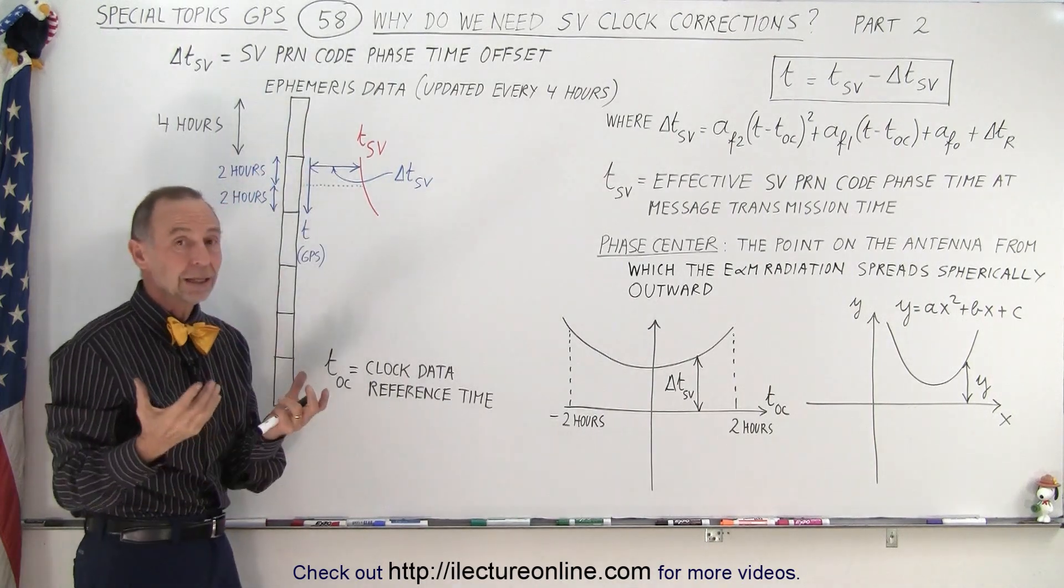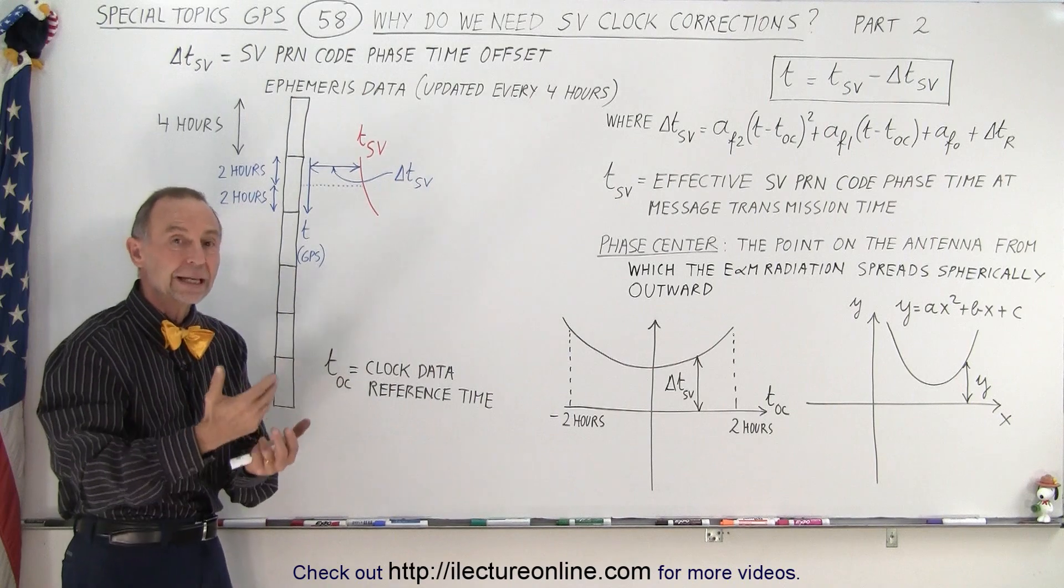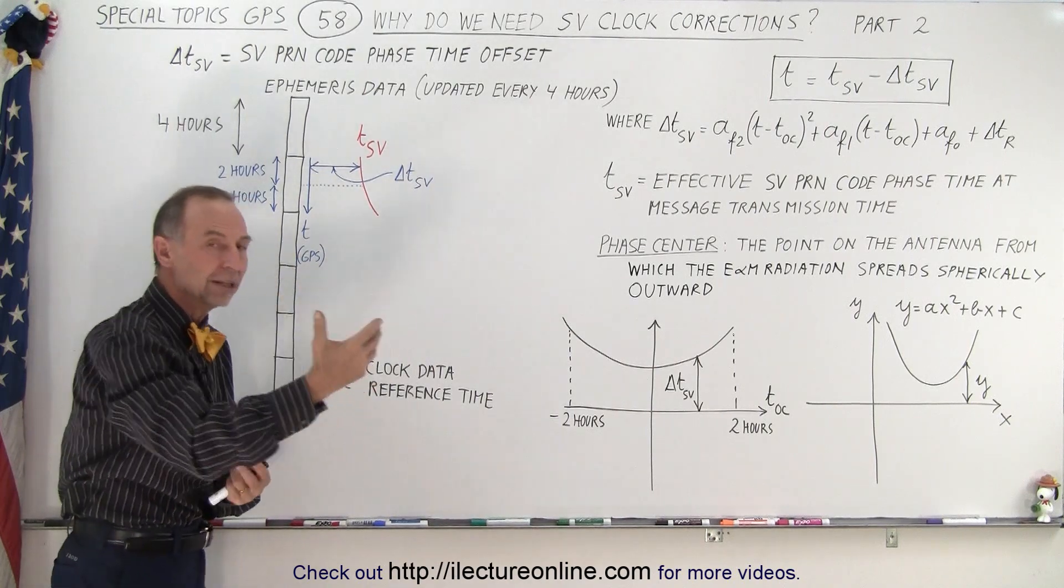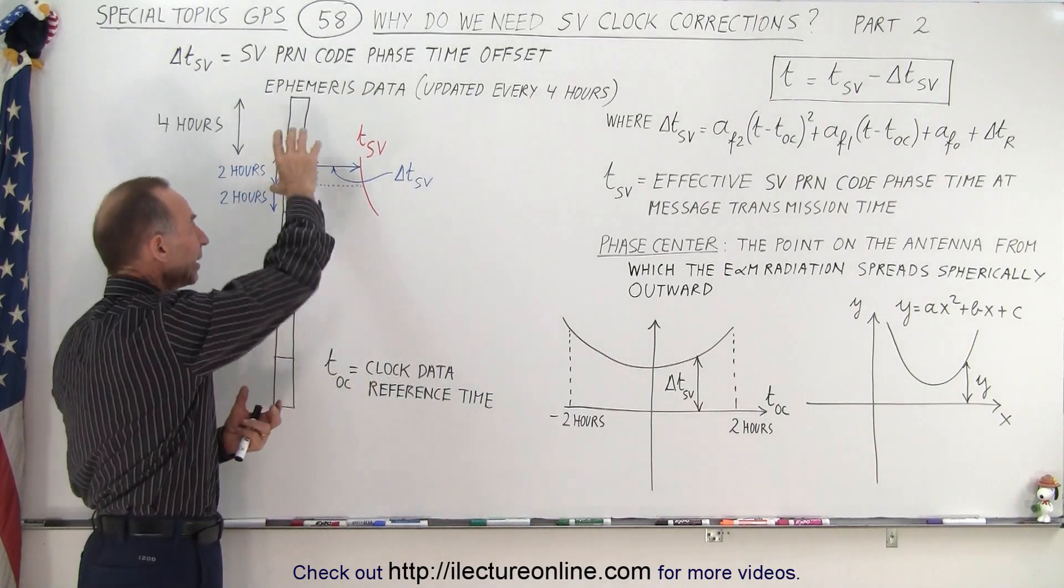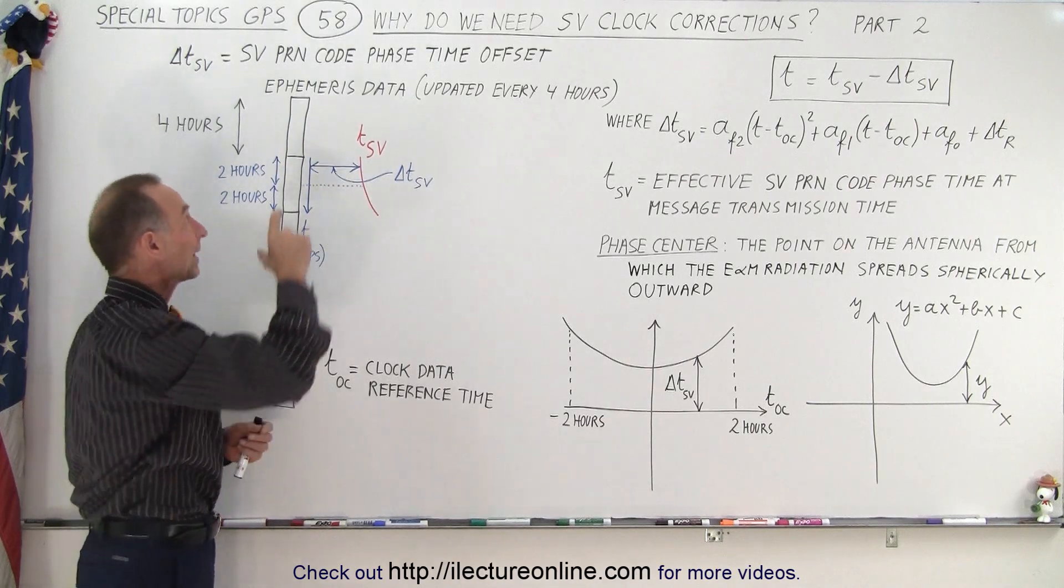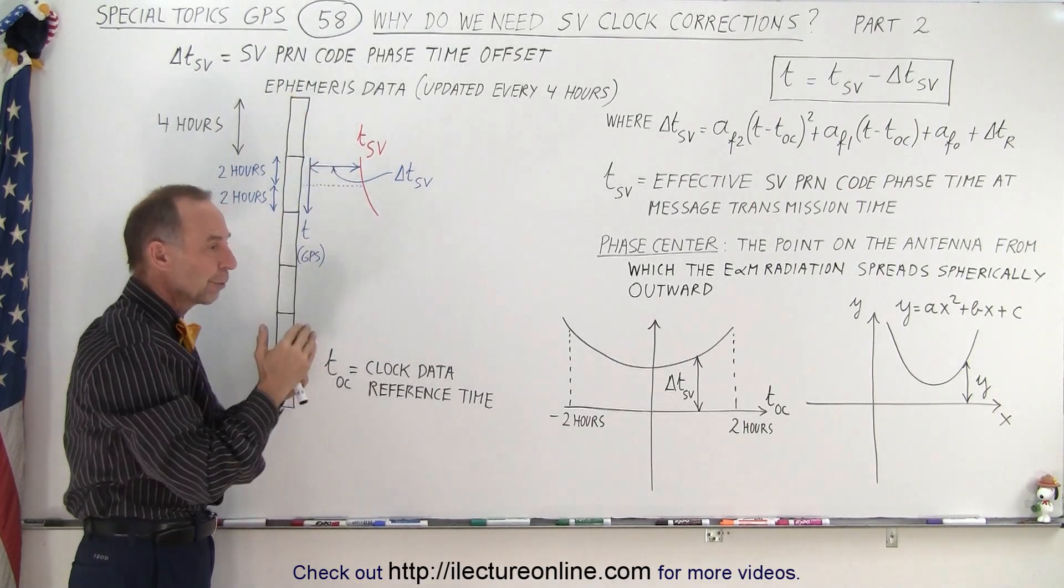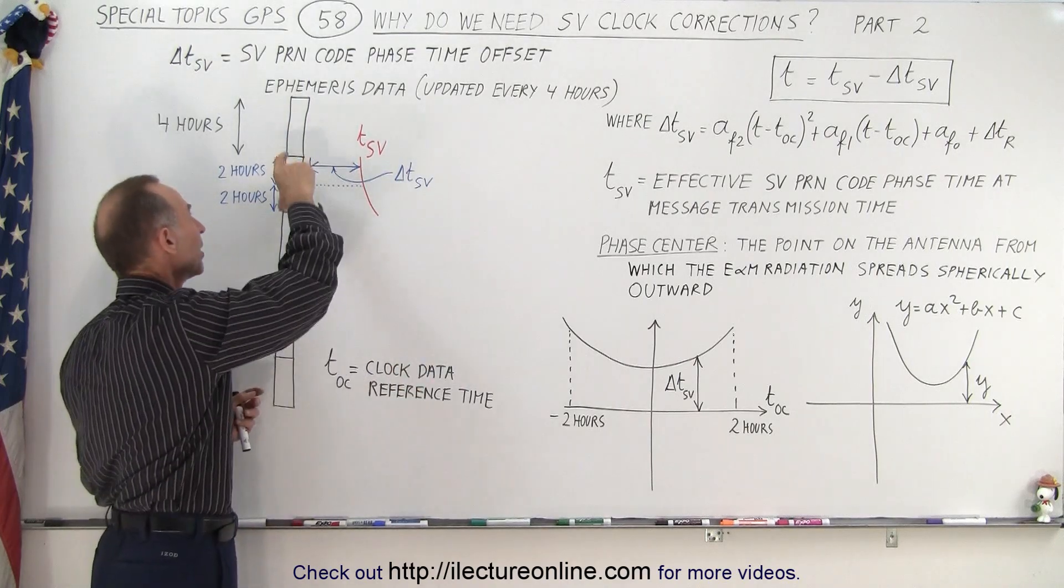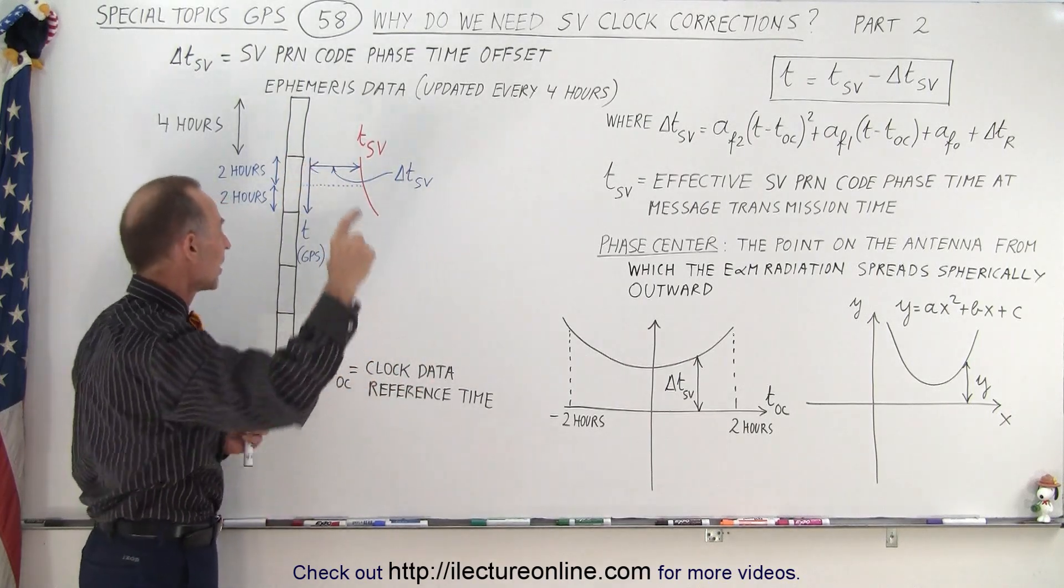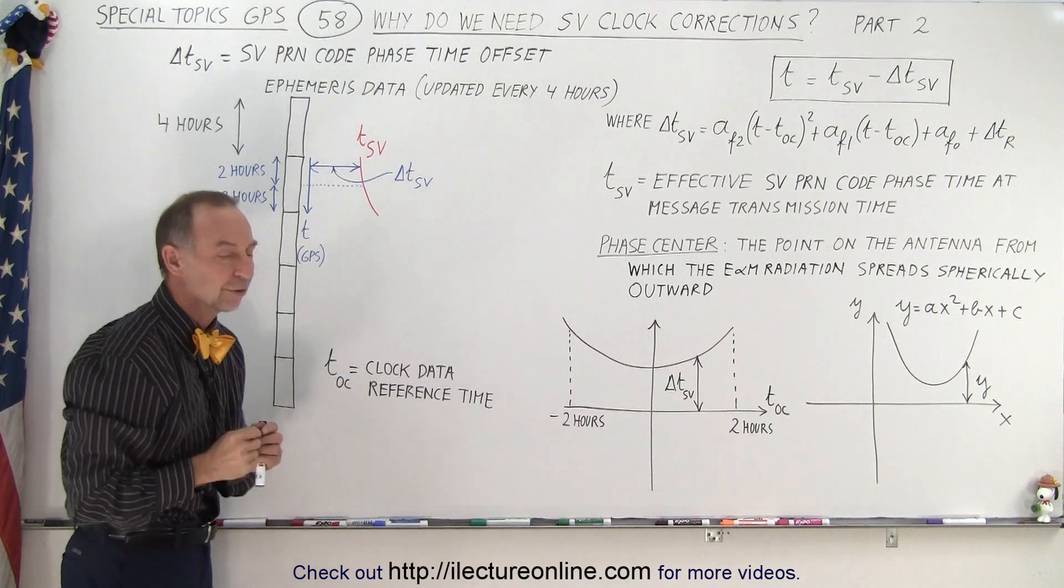So what happens then is we send six chunks of four-hour ephemeris data every day. Hopefully that can be done every day, and every day we send up a new set of ephemeris data in four-hour chunks, so that data will be transmitted from the satellite to the receiver for a period of four hours before we go to the next set, transmit that for four hours, to the next set, transmit that for four hours, and so forth.